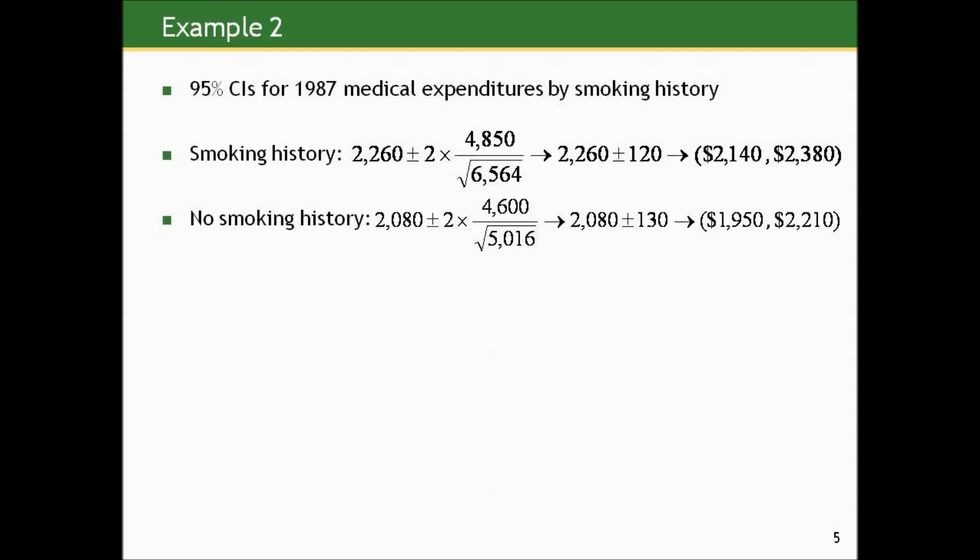Notably, the confidence intervals for the two groups overlap: the upper bound for the no-smoking-history group ($2,210) is larger than the lower bound for the smoking-history group ($2,140). This crossover suggests that after accounting for sampling variability, it's hard to ascertain whether there's a real difference in underlying mean expenditures. This is foreshadowing — the difference is not statistically significant because once we account for uncertainty, we don't see a clear distinction in the range of possible values.